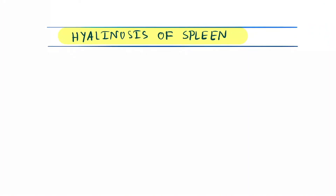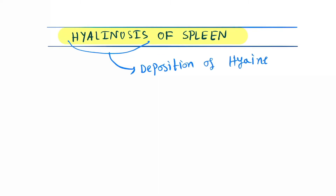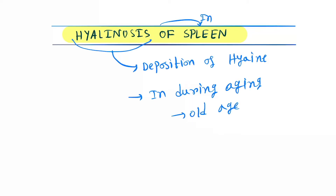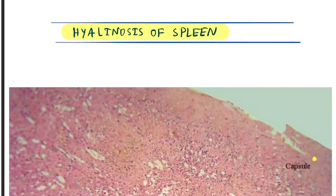Hello friends, today our topic is the hyaline cyst of the spleen. Hyaline cyst means the deposition of hyaline in the spleen. It mainly occurs during the aging process, that is in old age persons.